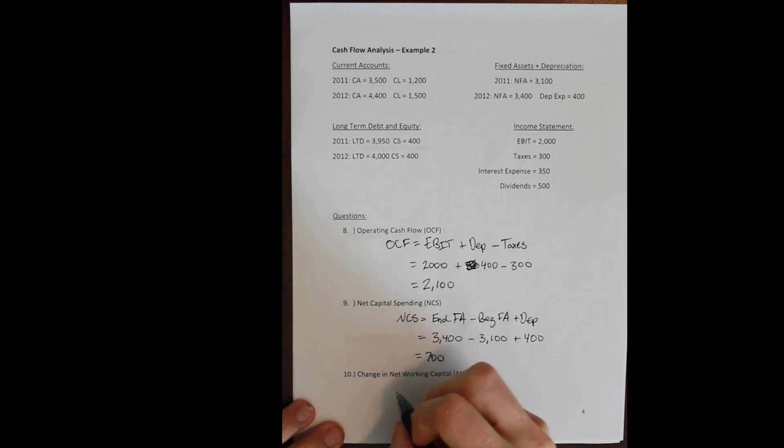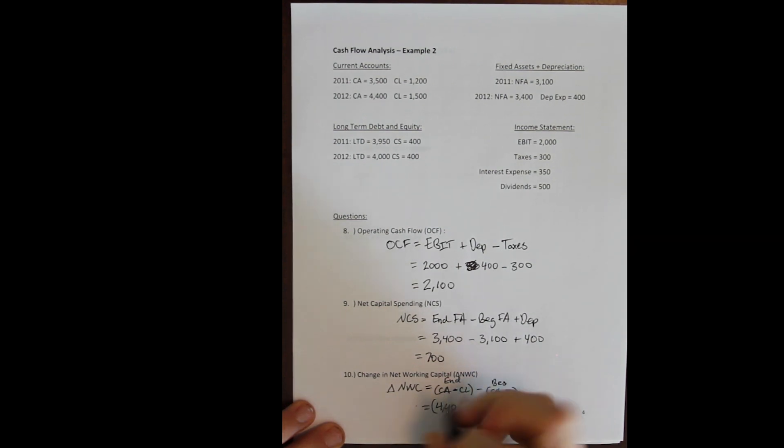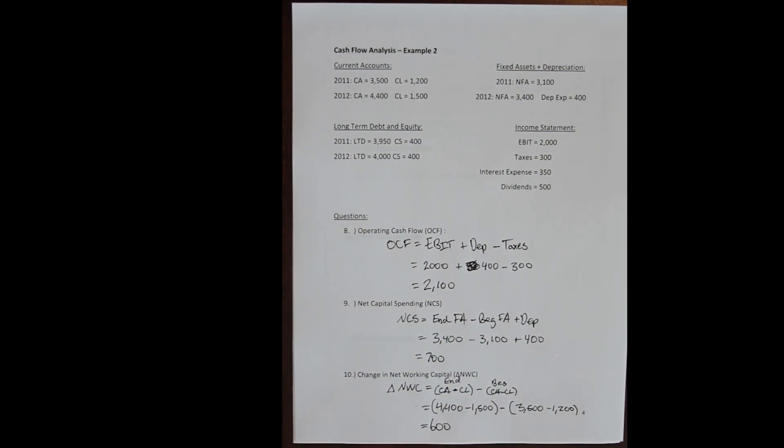Did we spend any more of this money on our current assets? Maybe we bought some more inventory, maybe we increased our savings account or our cash account. We want to look at what's called the change in net working capital to determine that. That's our ending net working capital, current assets minus current liabilities, minus our beginning net working capital, also current assets minus current liabilities. So working capital in 2012: 4400 minus 1500, all of that minus our working capital in 2011 which is 3500 minus 1200. That gives us an investment in working capital here of 600 for the year.